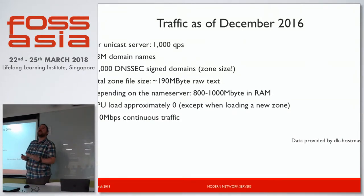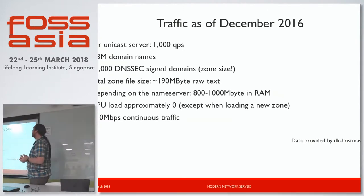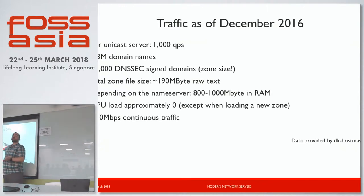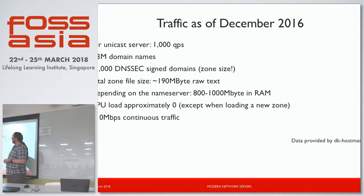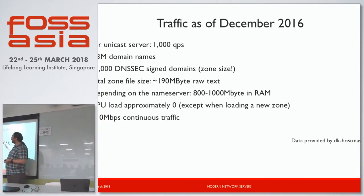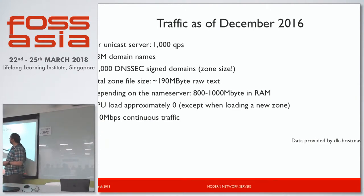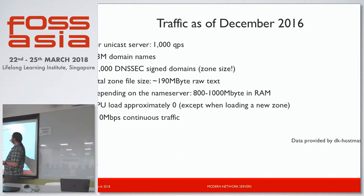As of December 2016, the traffic on the .dk DNS servers was about a thousand queries per second — compared to the root or .com or other larger DNS domains, this is pretty much a rounding error. There are about 1.3 million .dk domains in the zone. Eleven thousand of them are DNSSEC-signed, which is honestly the sad state of DNSSEC deployment in the world, and the main effect is that DNSSEC signatures increase the zone file size quite a bit.